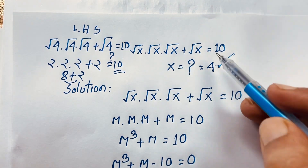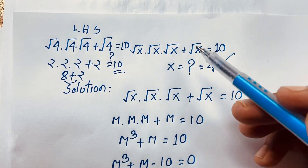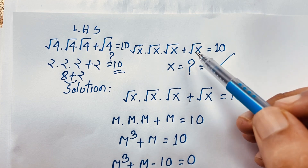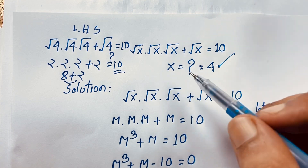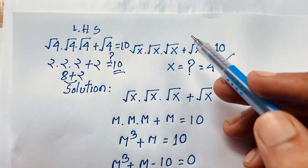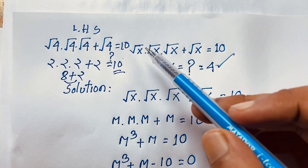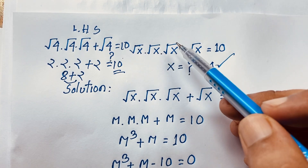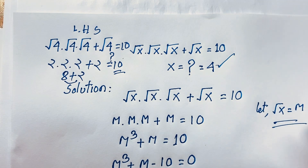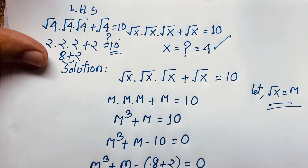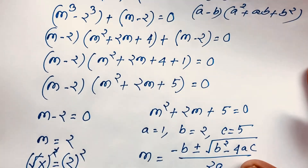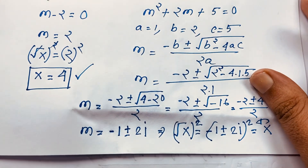So x equals 4 is the solution to this square root math problem, this viral Math Olympiad question. It is interesting because it involves a cubic equation with the square root x terms. Thank you all — if you enjoy this video, please follow my channel for more interesting videos. Goodbye, take care.